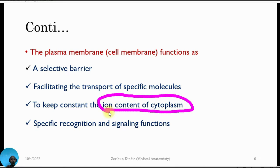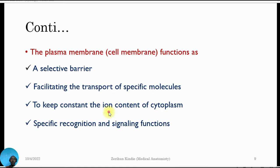The plasma membrane also functions to keep constant ion content within the cytoplasm. Inside the cell, you find potassium and bicarbonate, while extracellularly you find sodium and chloride. These ion concentrations must be maintained by the plasma membrane.